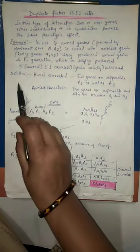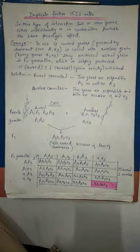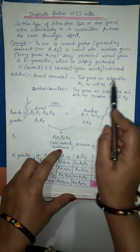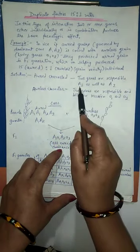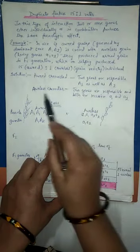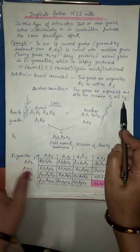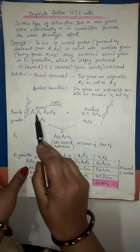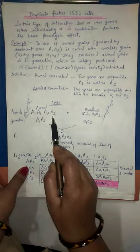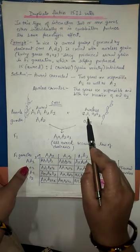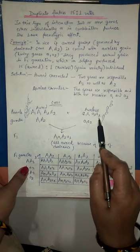So the solution is, it is due to the duplicate effect or duplicate factor effect. Here, the orn character is governed by the two genes, both are dominant, A1 and A2, and ornless character by small a1 and small a2. The parents are capital A1, A1, A2, A2, and ornless are small a1, a1 with small a2, a2.